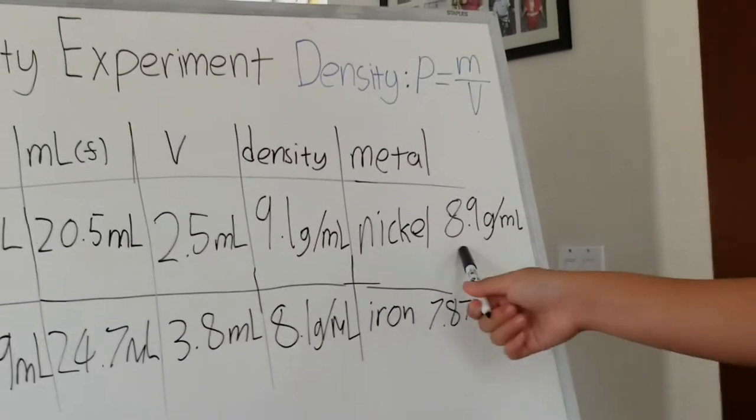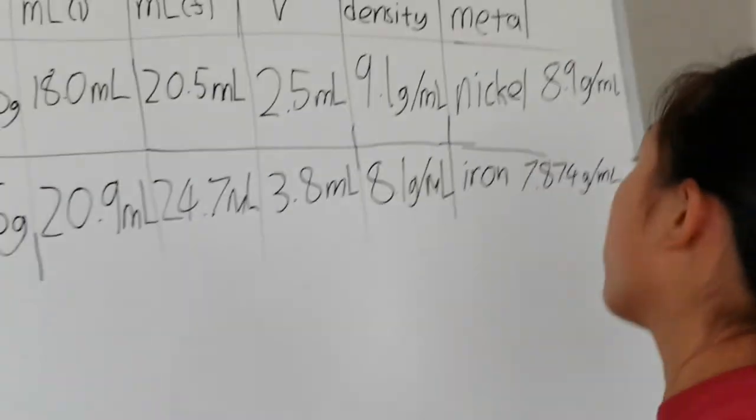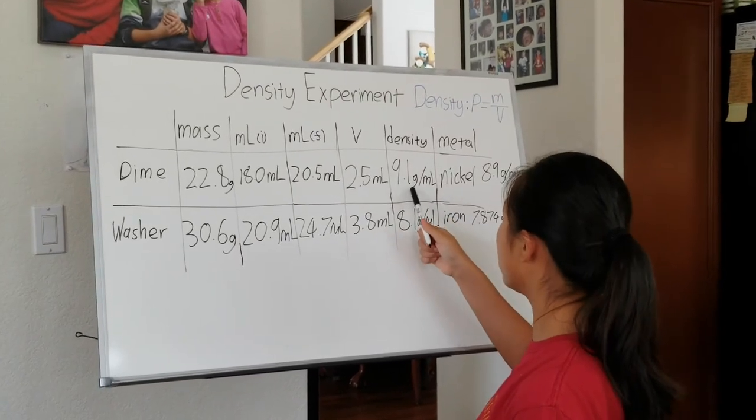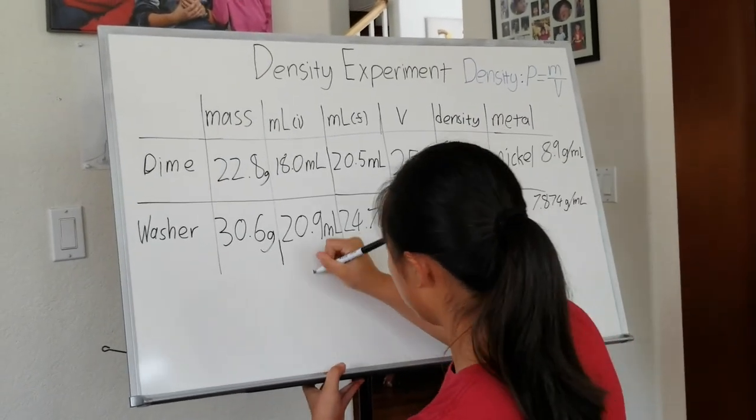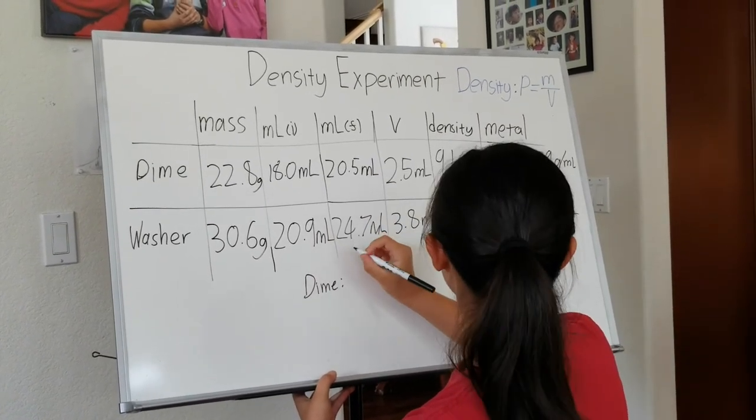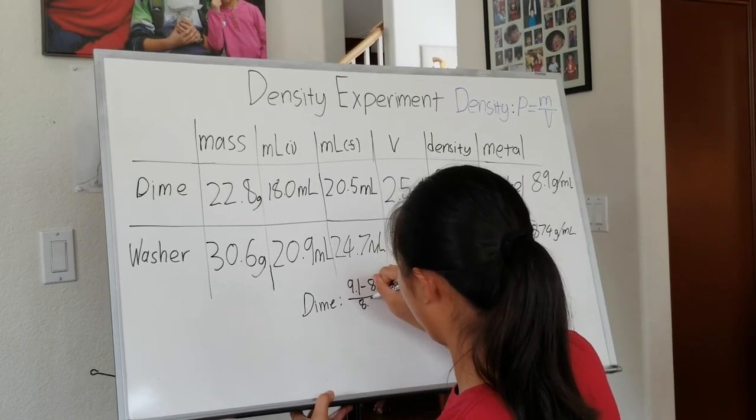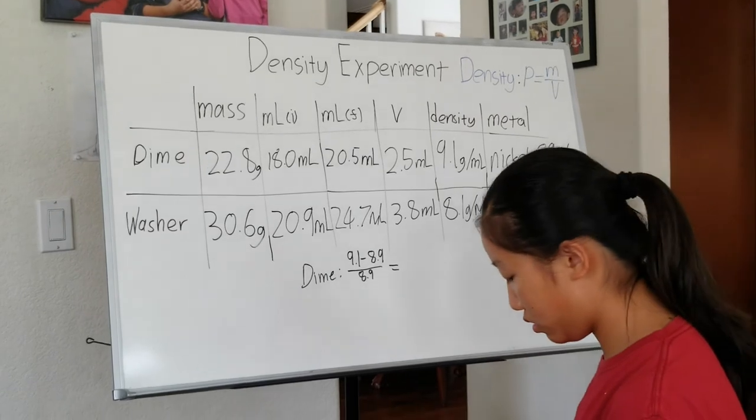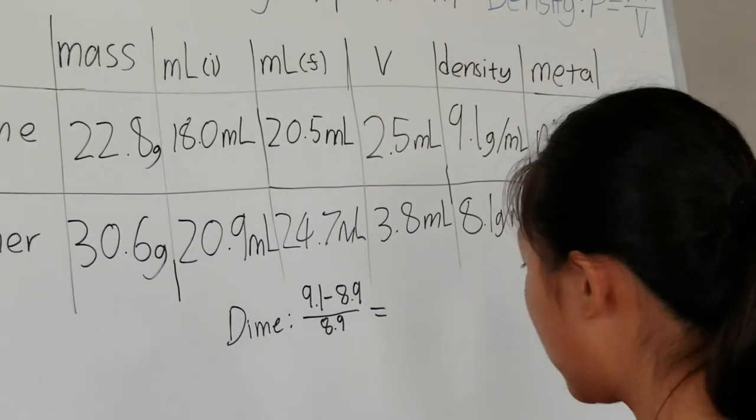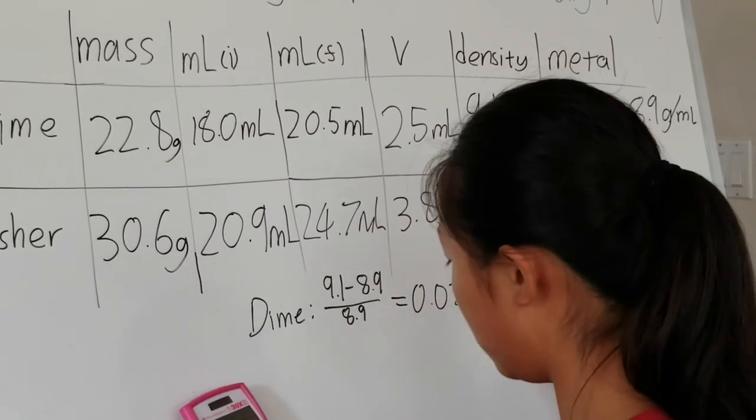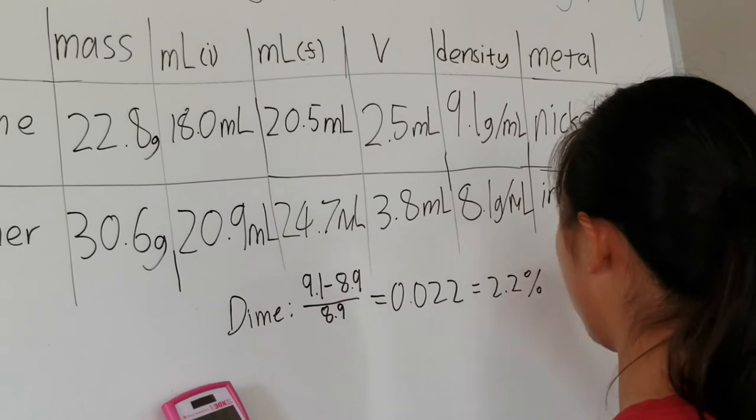So now there's a difference between these, and right now we'll find the error of our experiment. So for error, you would subtract the answer that you got minus what the answer really is. So for the dimes, it would be 9.1 minus 8.9 divided by 8.9, equals 0.022. So your percentage error would be 2.2%.